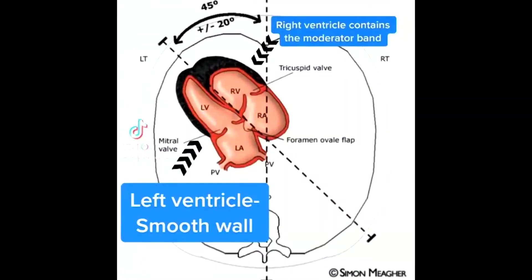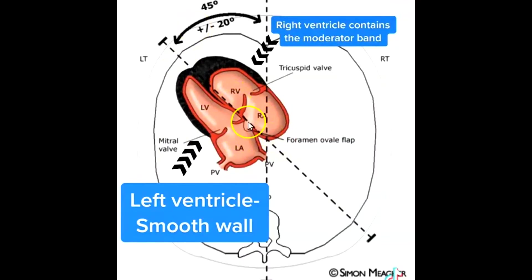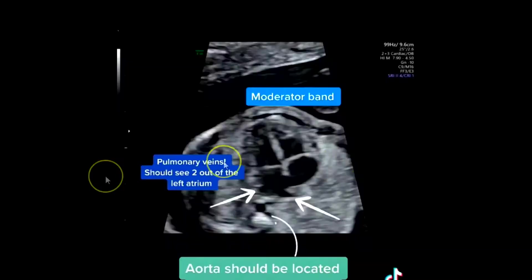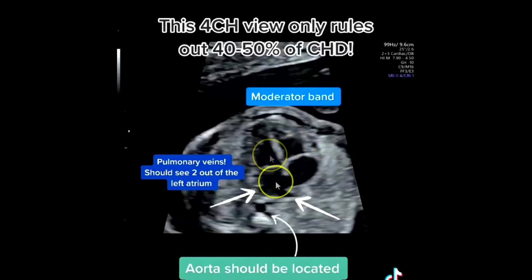Here you have a diagram showing the four chamber view with the right atrium, right ventricle, left atrium, and left ventricle. The heart is usually at a 45 degree angle — off the midline sagittal axis by about 45 degrees to the left. You can also identify the pulmonary veins in this view.